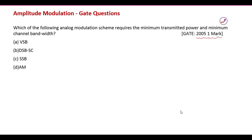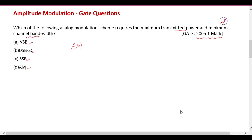The next question asks which analog modulation scheme requires the minimum transmitter power and minimum channel bandwidth. To answer this, we compare the transmitted power and channel bandwidth of all modulation schemes. Starting with conventional amplitude modulation, it has a bandwidth of 2F_M.